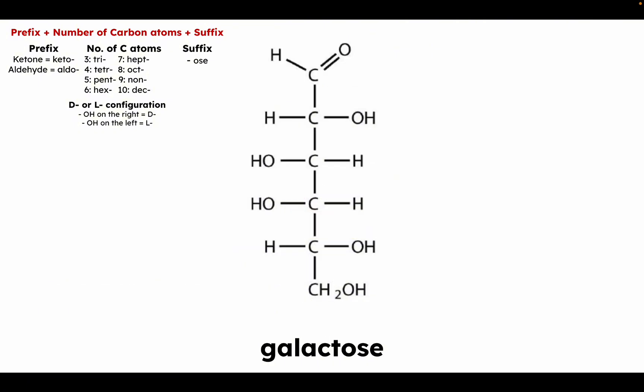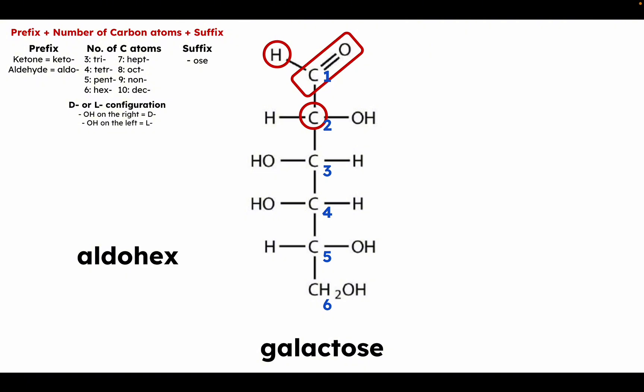Now let's look at galactose. You see an aldehyde, so this is 'aldo.' Count the carbon atoms: one, two, three, four, five, six. Six is 'hex,' then we add the suffix '-ose' — giving us aldohexose. The chiral carbons are two, three, four, and five. Carbon six is not counted because it is not chiral. The highest numbered chiral carbon is number five, and the hydroxyl group on carbon five is on the right, so this is a D sugar.